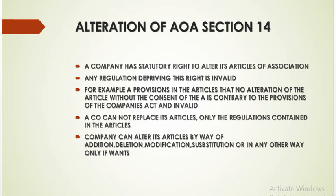First of all, we will see that the alteration of article of association is governed by Section 14 of the Companies Act. A company has its statutory right to change its article of association and any regulation which deprives this right is invalid. For example, if there is a provision in the article that no alteration is possible without the consent of someone, then it is contrary to the provisions contained in the Companies Act, so it is invalid.